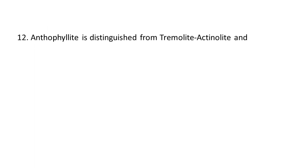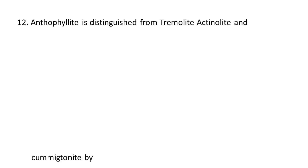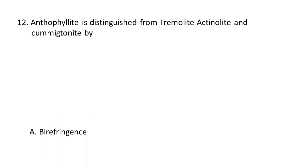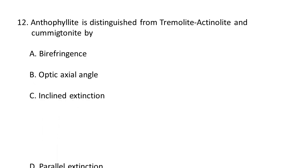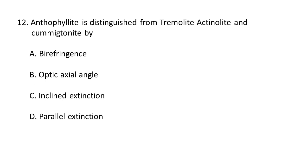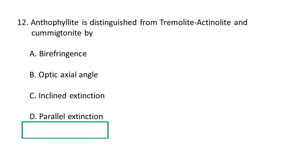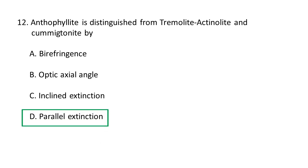Next question: Anthophyllite is distinguished from tremolite, actinolite, and cummingtonite by — A. birefringence, B. optic axial angle, C. inclined extension, D. parallel extension. Anthophyllite is distinguished from tremolite, actinolite, and cummingtonite by parallel or straight extension. D is the correct option.